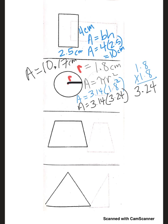Let's backtrack with the circle. Step 1: we needed to know the radius — most problems will give you the radius or show you the center point. The radius is the distance from the center of the circle to the edge; ours was 1.8 centimeters. We wrote area equals pi r squared, with pi as 3.14. We squared the radius — 1.8 times 1.8 is 3.24 — then multiplied by pi 3.14 to get 10.17.